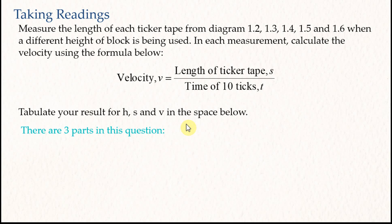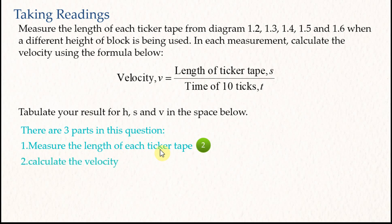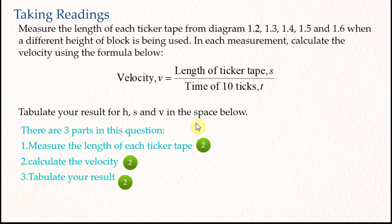There are three parts in these questions. The first part is to measure the length of each ticker tape, which usually gives two marks. The second part is to calculate the velocity, which gives another two marks. The last part is to tabulate your results, which gives another two marks — so in total there are six marks. In this video I'm going to focus on taking readings from given pictures.